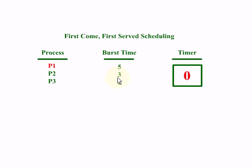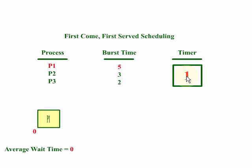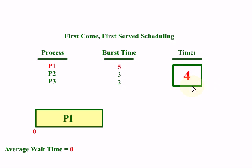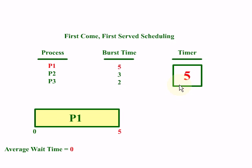Let me show you an animation to explain this. We will start with Process 1. The first second is going on and the process is continuing — 2, 3, 4 milliseconds — and then the last one, 5 milliseconds. Once this 5 milliseconds time completes, the P1 process has completed. So the waiting time of P1 is 0, and the execution time or burst time was 5 seconds. So P1 took 5 seconds for completion.